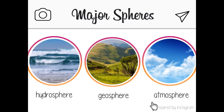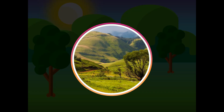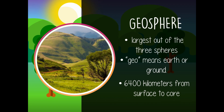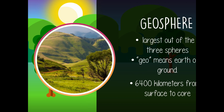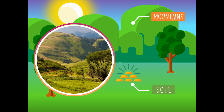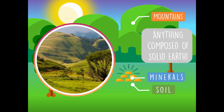Let's start with the geosphere. The geosphere is the largest out of the three spheres. The word 'geo' means earth or ground. It extends 6,400 kilometers from the surface down to the core. It comprises the solid portion of the earth, which includes the mountains, soil, minerals, and anything composed of solid earth.